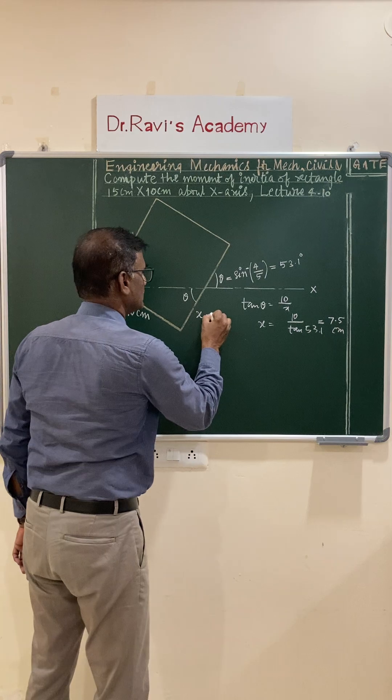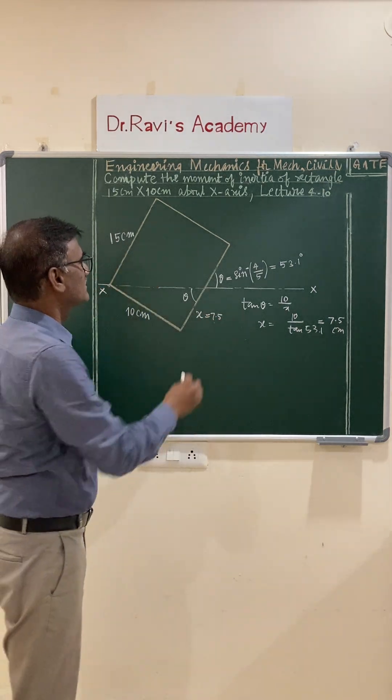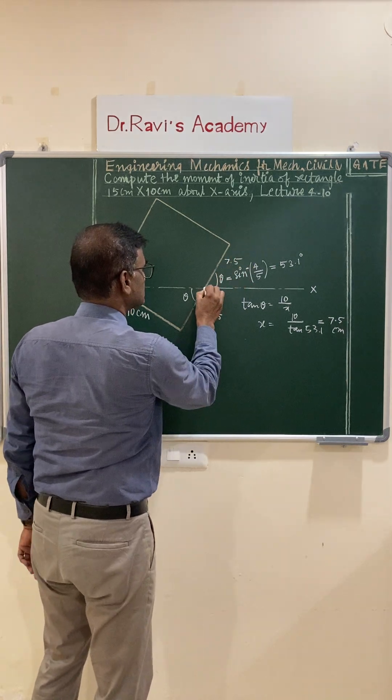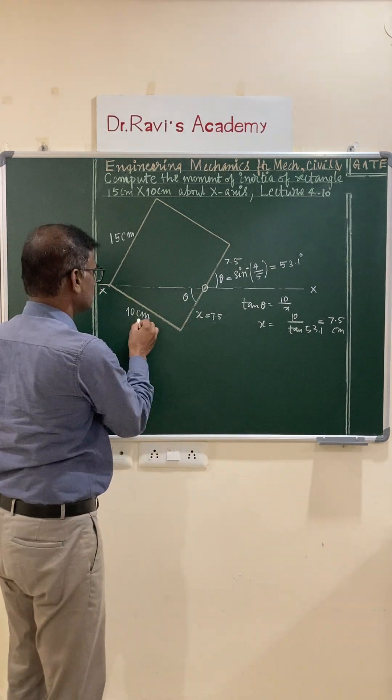This value you're going to get is 7.5 centimeters. So this x value is 7.5, means it is exactly half of this dimension. So this is also 7.5. This length - this is exactly the midpoint.